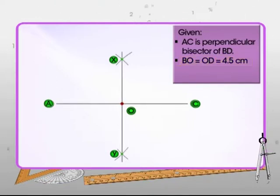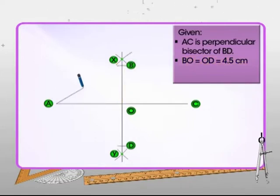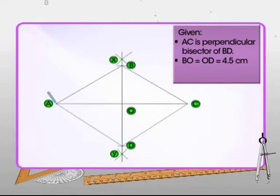Thus, with O as the center and radius equal to half BD, that is 4.5 cm, mark an arc to cut XY at point D and another arc on the opposite side to intersect XY at point B. Join AB, BC, CD, and DA to obtain the required rhombus ABCD.